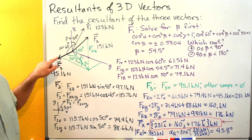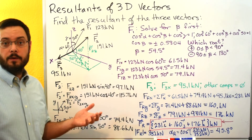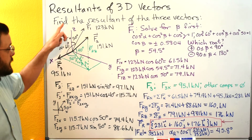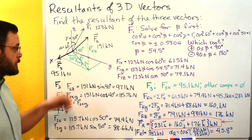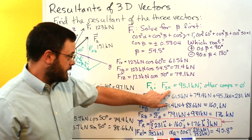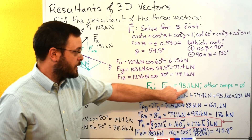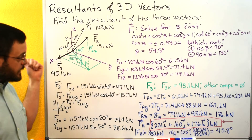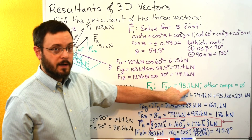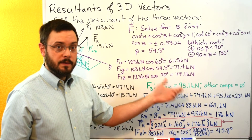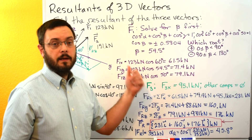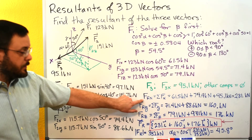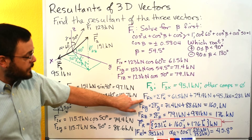For our last force, F3, it's going along one of the coordinate axes — in this case the x-axis. The same procedure applies if it were along y, z, negative z, etc. Its x component is simply 95.1 kilonewtons in the positive x direction. Its y component is zero and its z component is zero, because the whole force goes in the x direction.